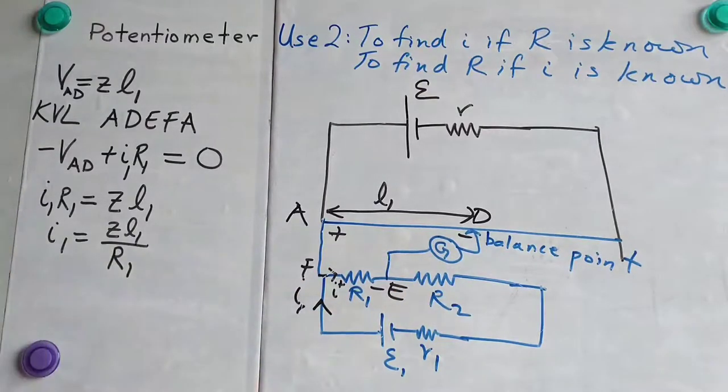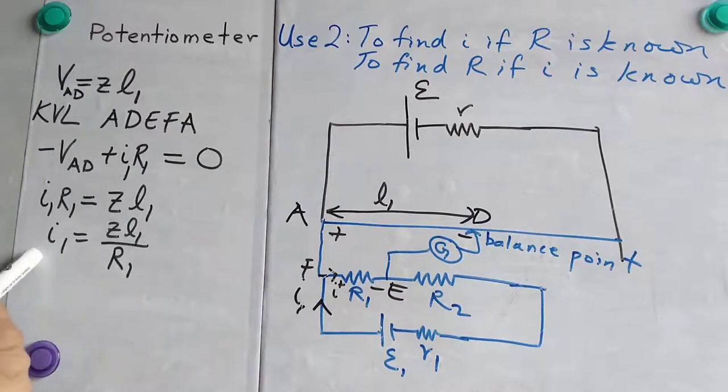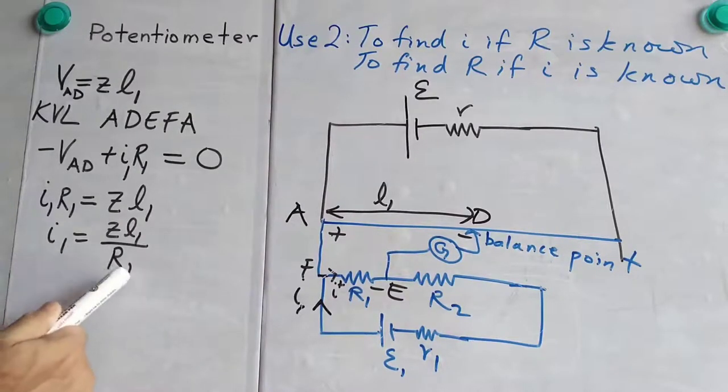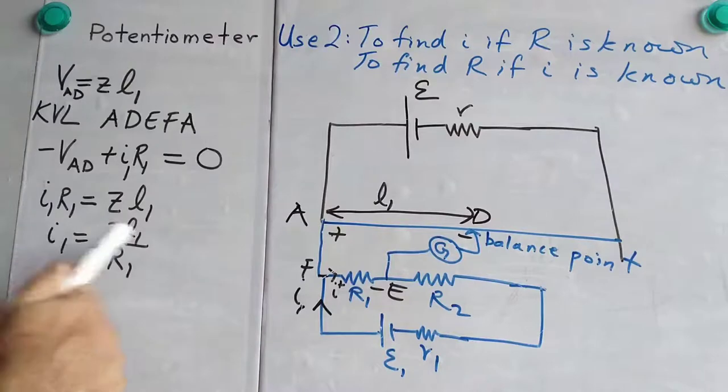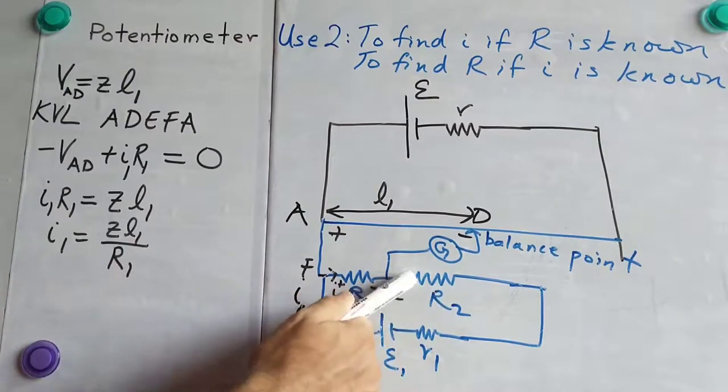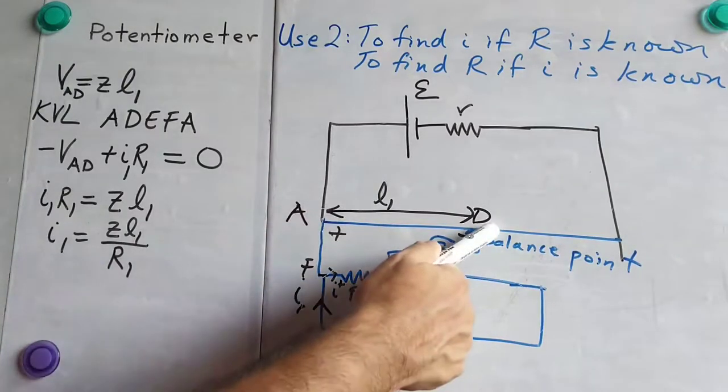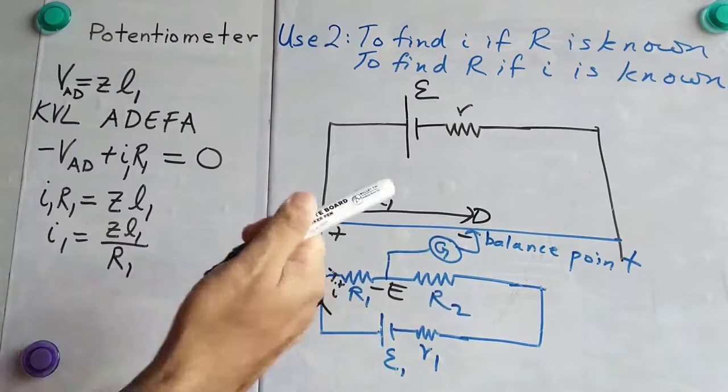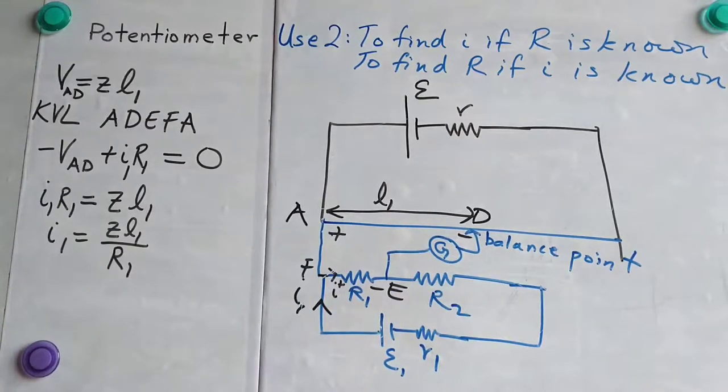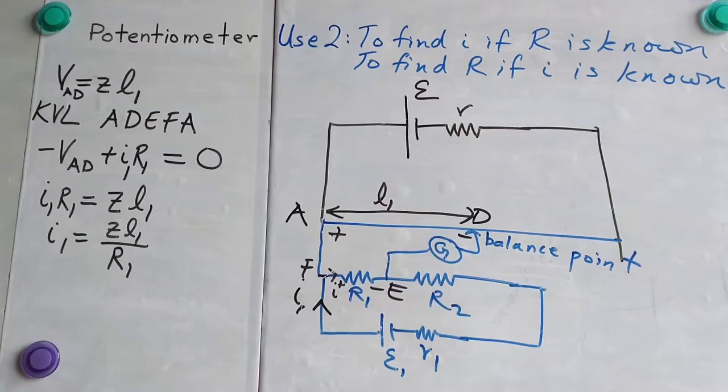And, this current will be equal to Z into L1 by R1. If we know R1, we can find I1. And, once we know I1, and if we don't know R2, we can connect this R2 to this circuit, in a similar manner as we have connected R1 here, and then we can find R2. So, by using this setup, we can find current if resistance is known, and we can find resistance if current is known.